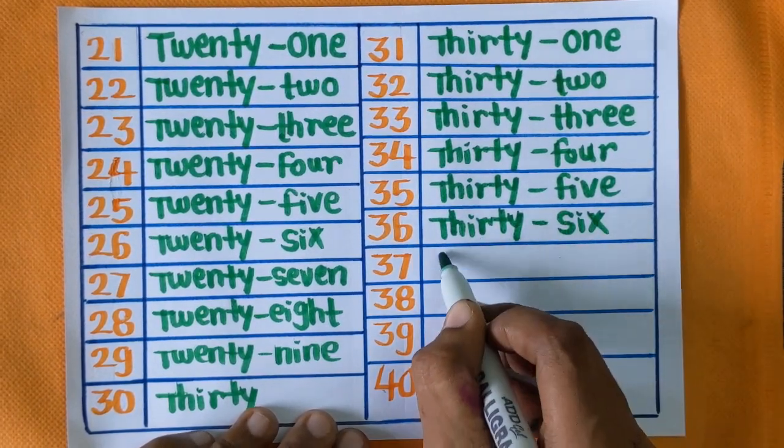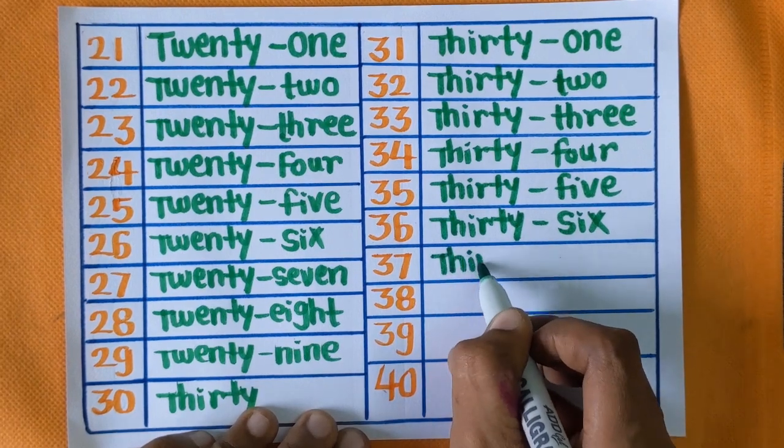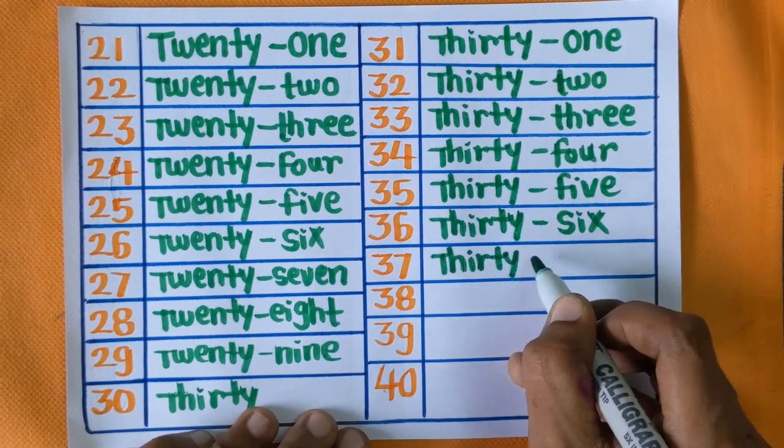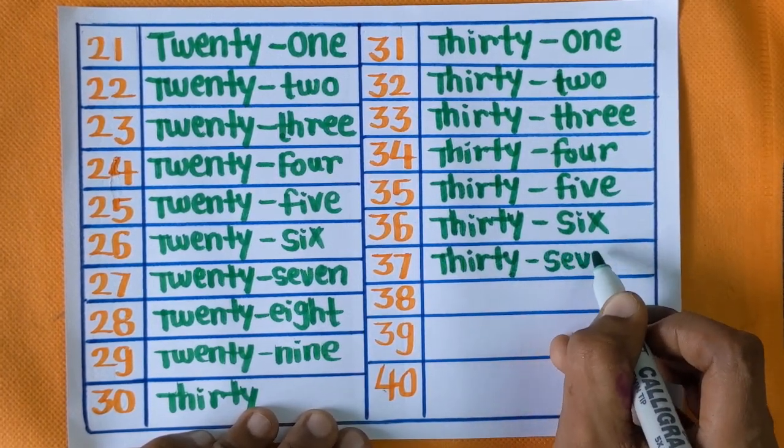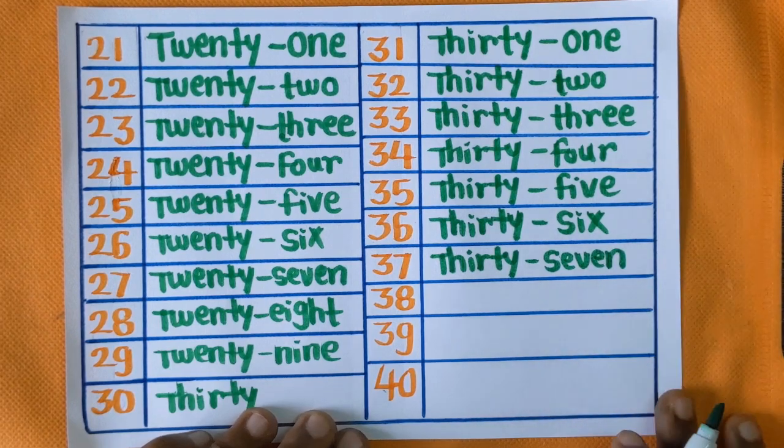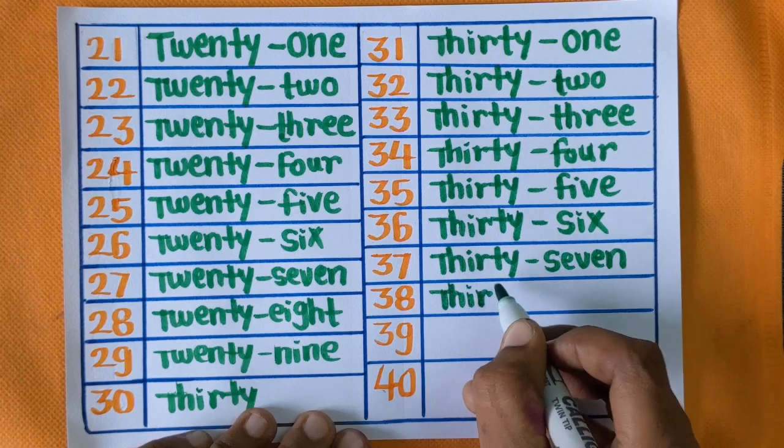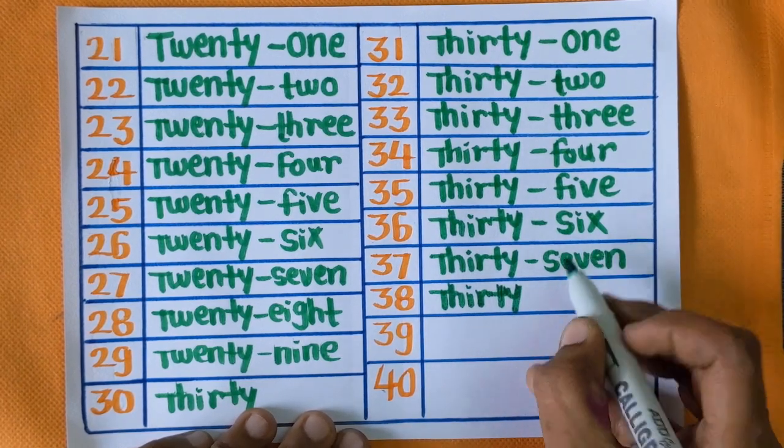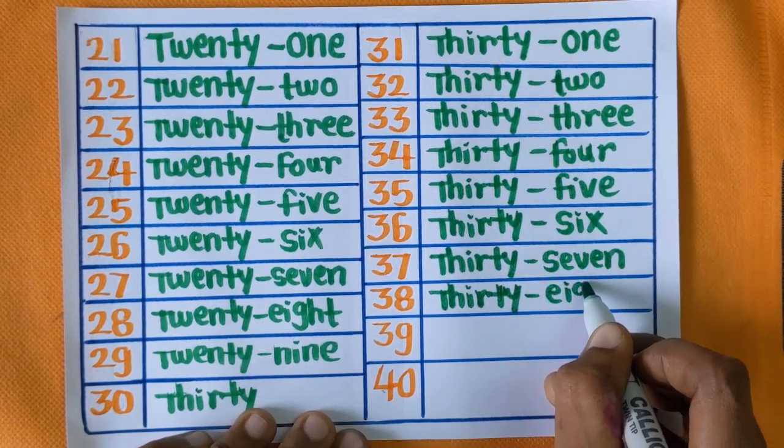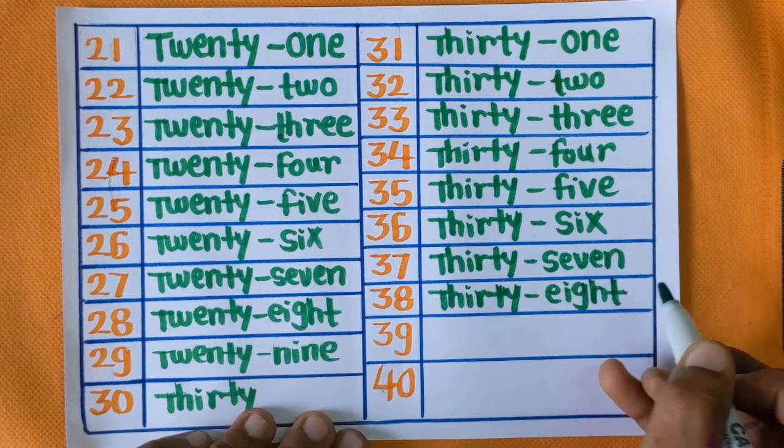Next is 37: T-H-I-R-T-Y, S-E-V-E-N, 37. Next is 38: T-H-I-R-T-Y, E-I-G-H-T, 38.